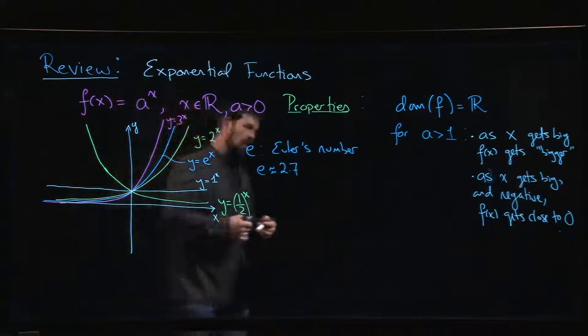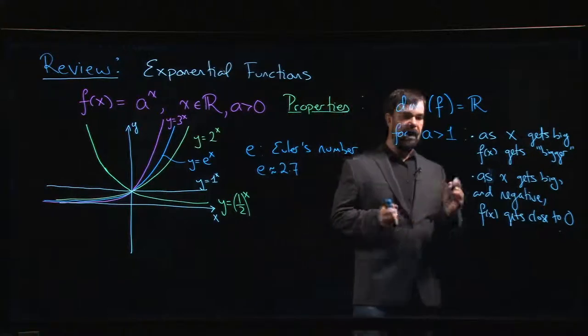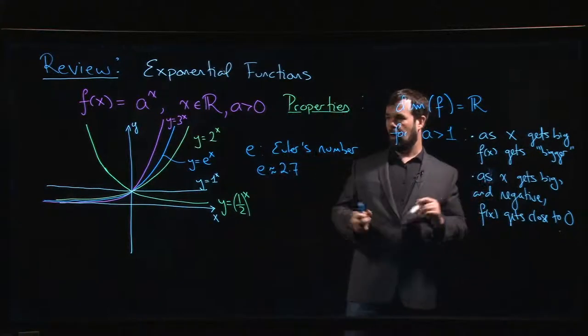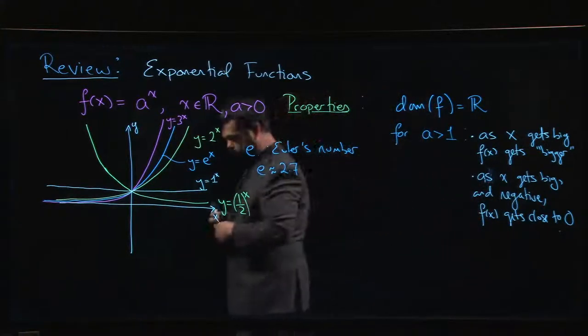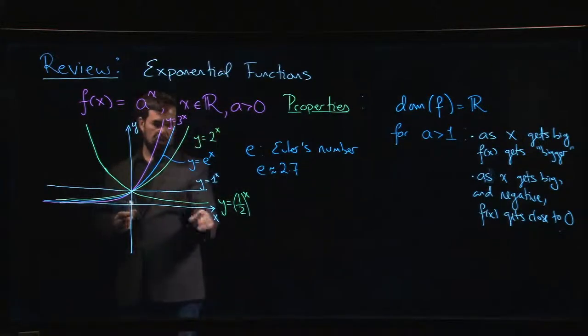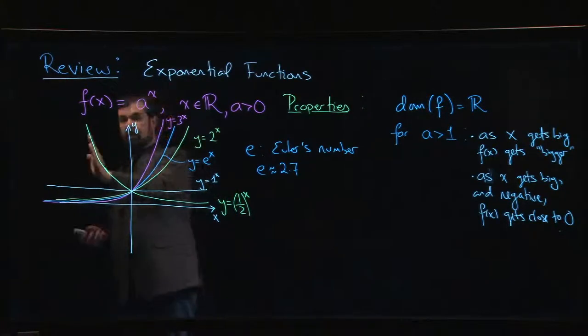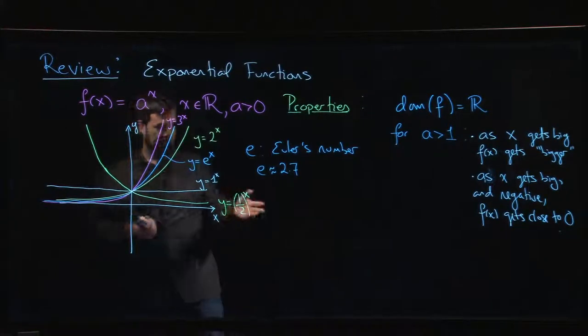For a between 0 and 1, it's just the opposite. For every number between 0 and 1, its reciprocal is bigger than 1. If you take the reciprocal of the base, you just reflect the graph across the y-axis, so you get the behavior going in the opposite direction.